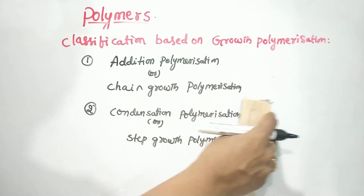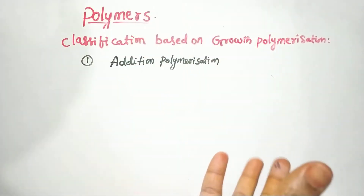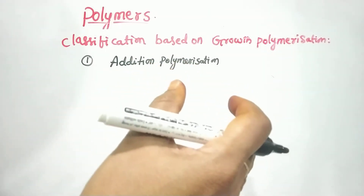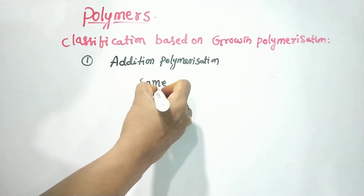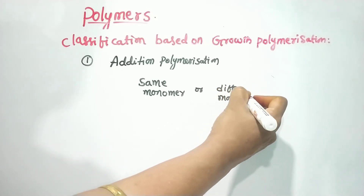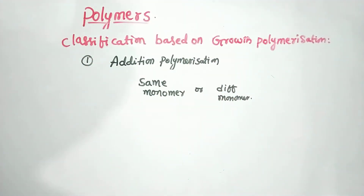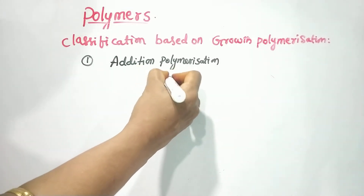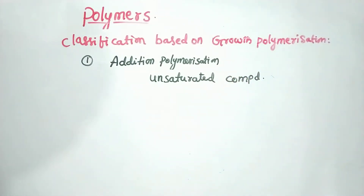Today we will discuss addition polymerization, or chain growth polymerization. We have already covered some of this in the last class. In addition polymerization, we use the same monomers. We use polythene as an example. The monomers can be the same or different monomers. For monomers in addition polymerization, we use unsaturated compounds — that is, compounds with double bonds, triple bonds.